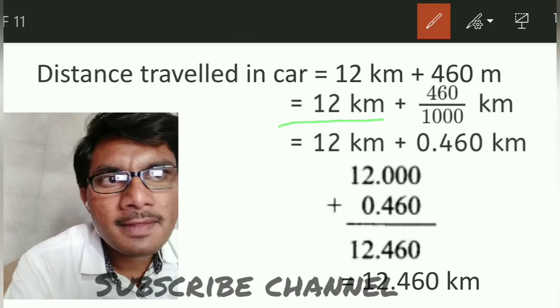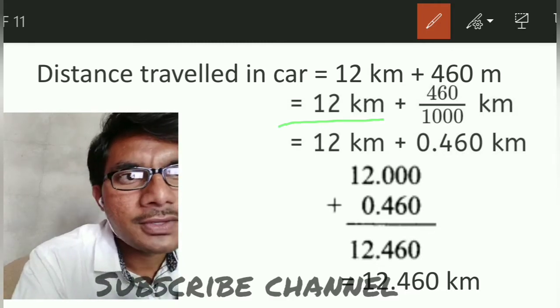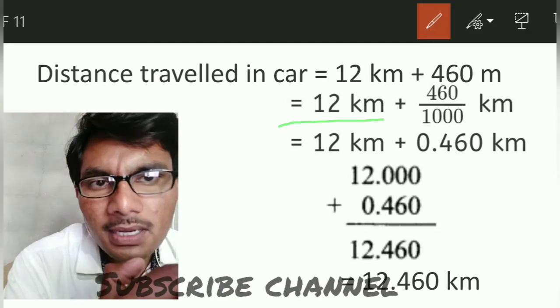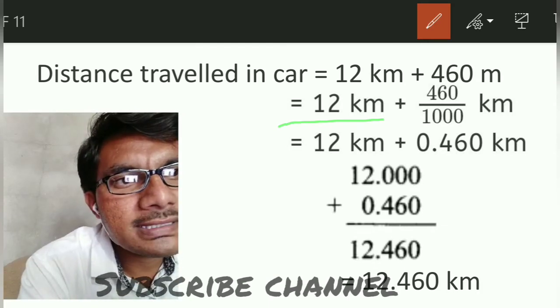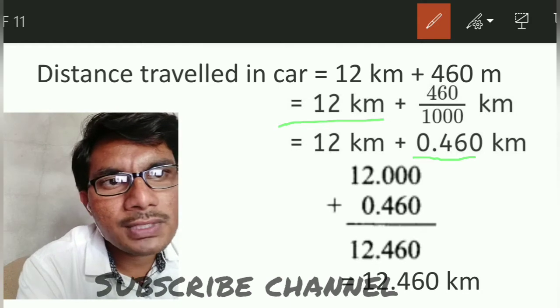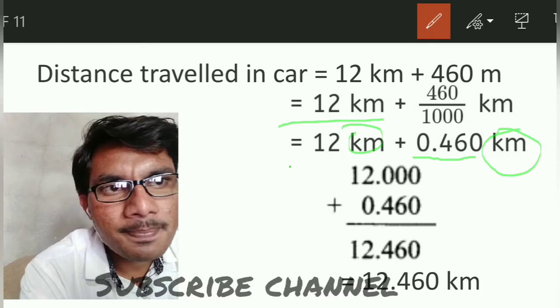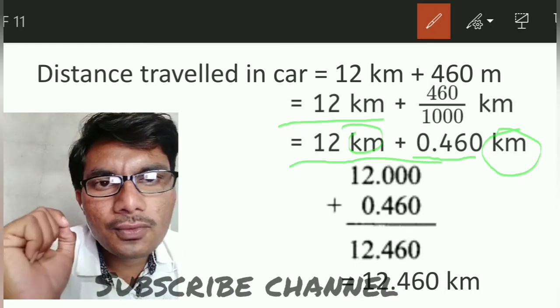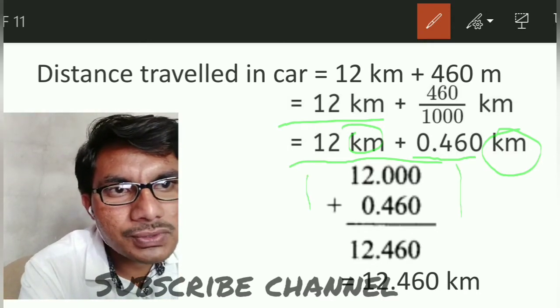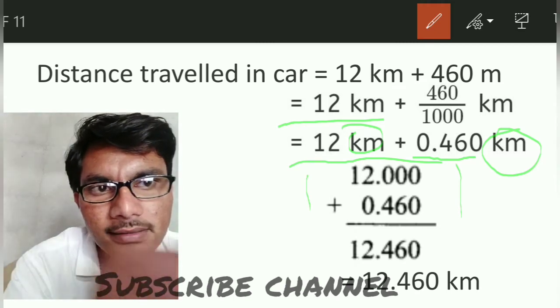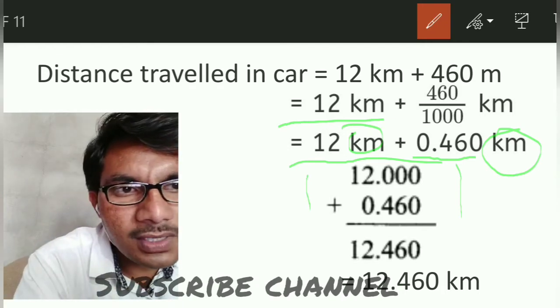12 kilometers as it is, plus 460 divided by 1000 equals 12 kilometers plus 0.460 kilometers. Adding vertically, we get 12.460 kilometers.